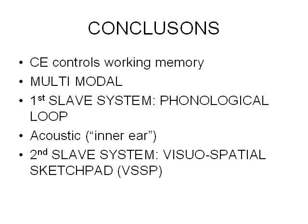The second slave system is the visuospatial sketchpad (VSSP), and that deals with visual encoding — it's the inner eye. So: a central executive that's in charge of everything, a phonological loop that handles sound, and a visuospatial sketchpad that handles vision.